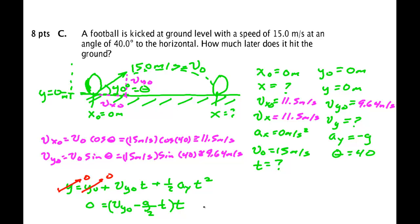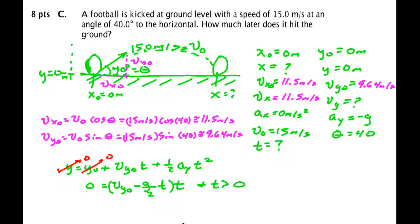So T equals 0, well that's when it started. That's not what I want to know. I want to know later, that is T has to be greater than 0. So we have T has to be greater than 0. That is, it's got to be after the ball was kicked. So that means this term here has to be 0. So that says the G over 2 T has to equal V Y not.